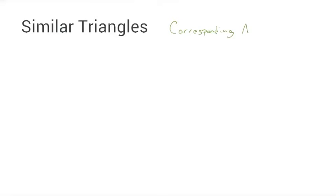Just a quick reminder of what similar triangles are. For triangles to be similar, the corresponding angles have to be congruent, and the corresponding sides are proportional.